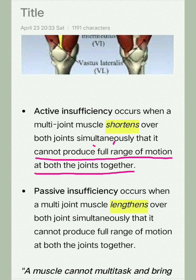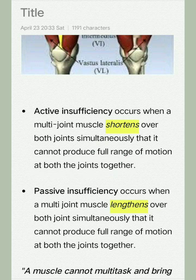Passive insufficiency occurs when a multi-joint muscle lengthens over both joints simultaneously such that it cannot produce full range of motion at both joints together. In both insufficiencies the muscle cannot produce full range of motion at both joints together, but the difference is that in active insufficiency the muscle shortens, while in passive insufficiency the muscle lengthens.